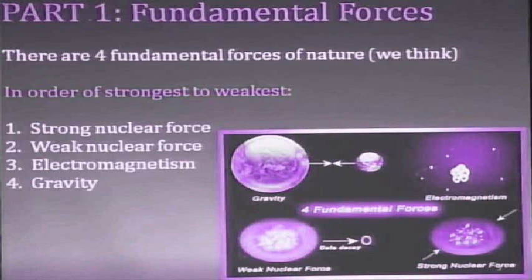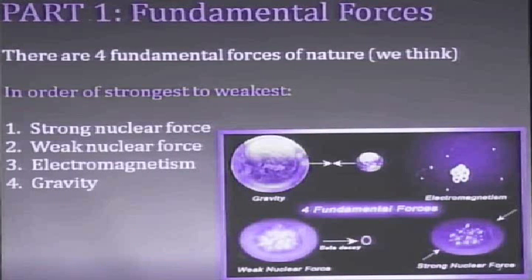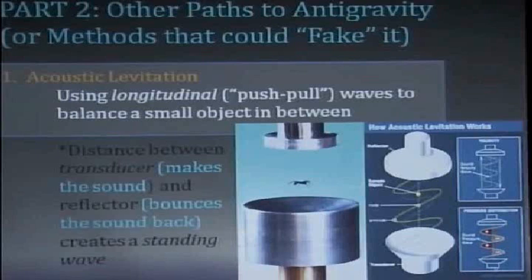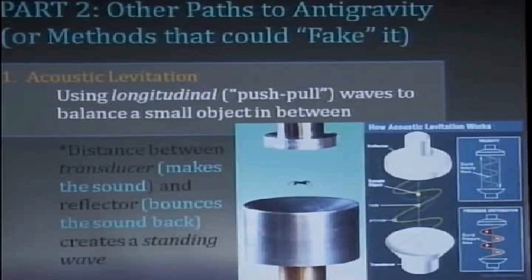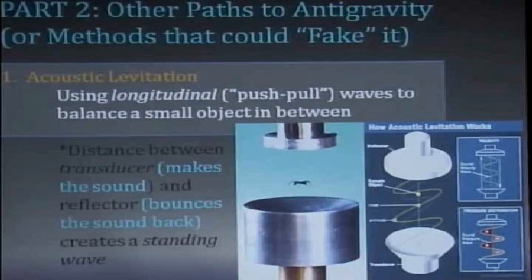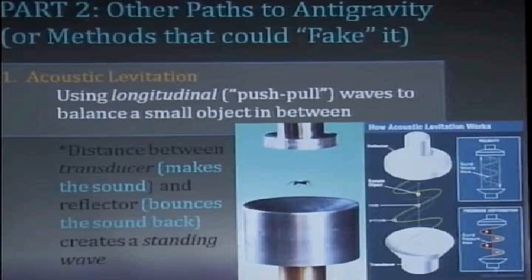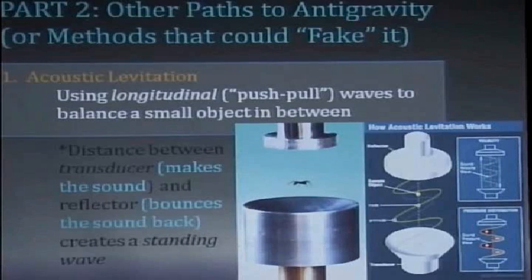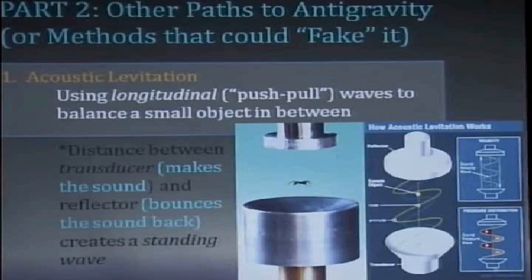So let's say that we aren't able to unite these forces within our lifetimes. What are some other methods that we currently have where we could maybe fake anti-gravity in a different way? Idea number one is pretty cool. It's called acoustic levitation. This is basically levitating objects using sound waves. You can see they're doing it right there with a spider. And you have to very carefully place objects at the right distance between the transducer making the sound waves and the reflector reflecting them.